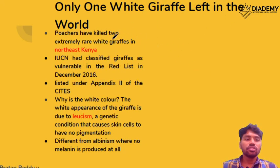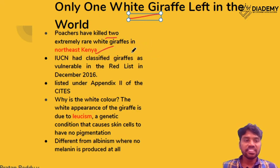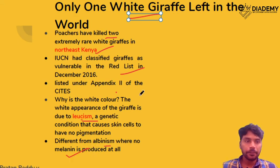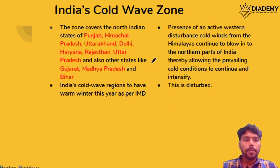Recently, two of the world's few remaining white giraffes were killed by poachers in Kenya, leaving only one white giraffe alive. The white giraffe is on the IUCN Red List and listed in Appendix 2 of CITES. The white coloration is caused by leucism — a rare genetic condition where cells lack pigmentation. This is different from albinism, where there is no melanin production at all.